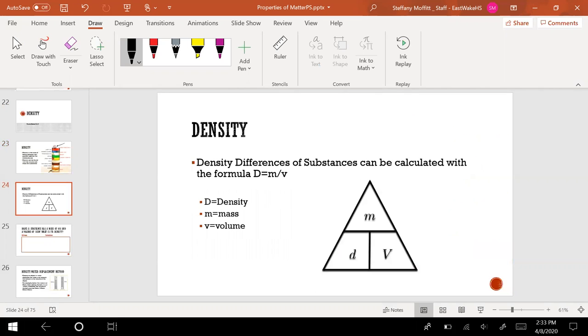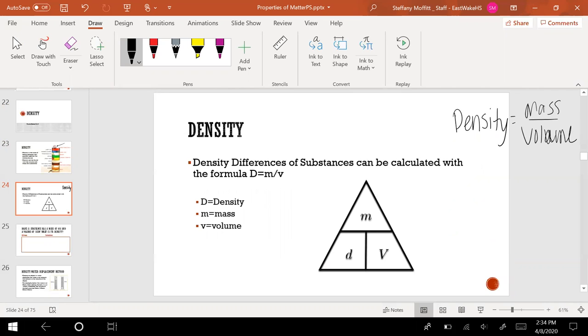Our density formula is density equals mass divided by volume. They also give us a triangle here, and if you remember correctly, if they're next to each other they multiply, if they're on top and bottom they divide.